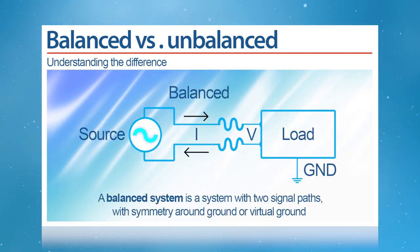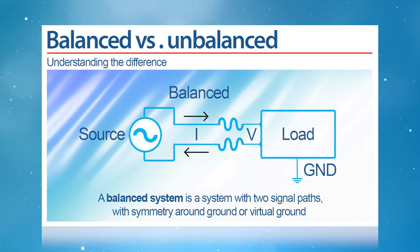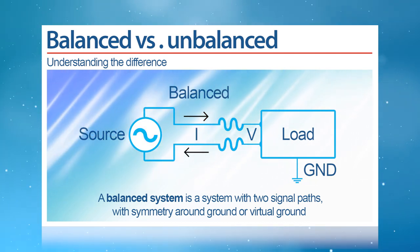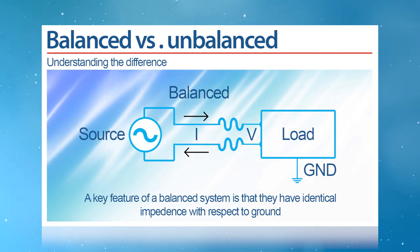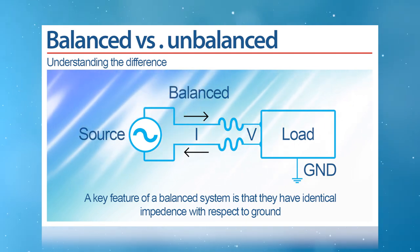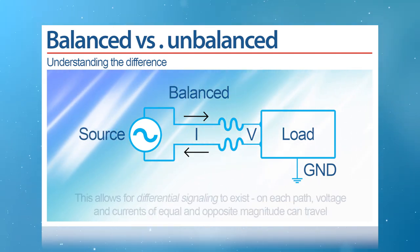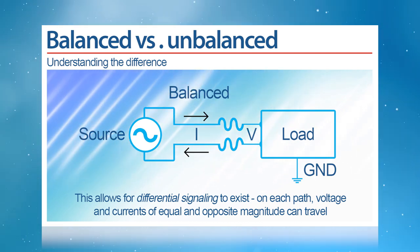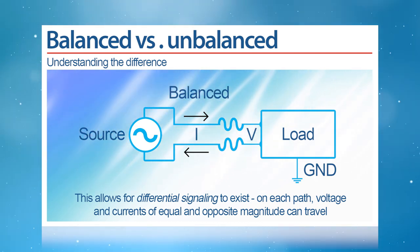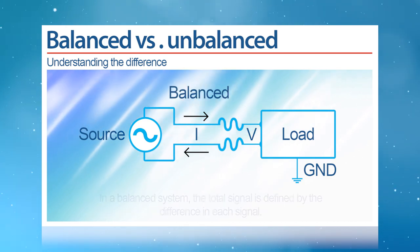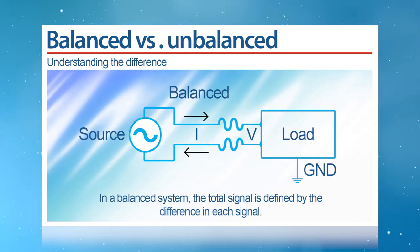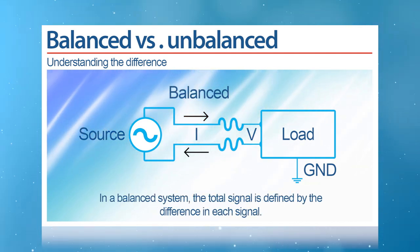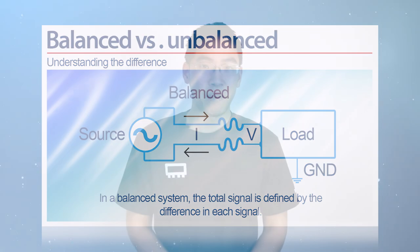A balanced system is a system with two signal paths with symmetry around ground or virtual ground. The key feature is that they have identical impedance with respect to ground. This allows for differential signaling to exist, where on each path voltage and currents of equal and opposite magnitude can travel, with the total signal being defined by the difference in each signal. The main benefit of this is it allows common mode noise to be rejected.